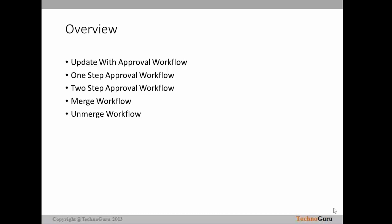In one step approval process, the data steward will create the record and his or her manager will approve it. However, in the two step approval process, we have a different mechanism that we are going to cover in today's session. The merge workflow and unmerge workflow are very straightforward — whenever the record gets merged or unmerged, the appropriate approvals will be placed or the task will be appropriately created.